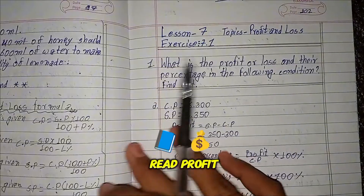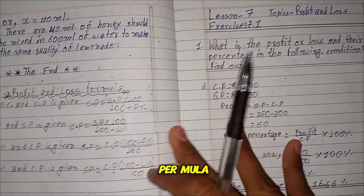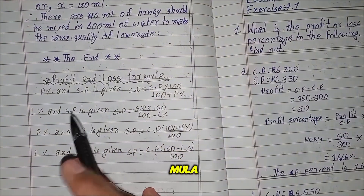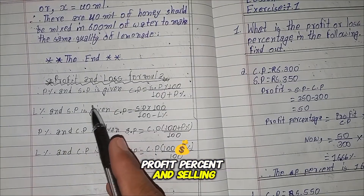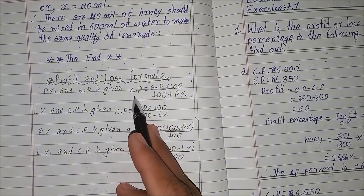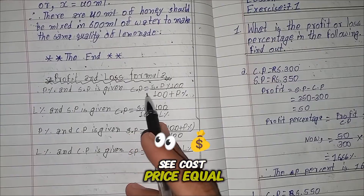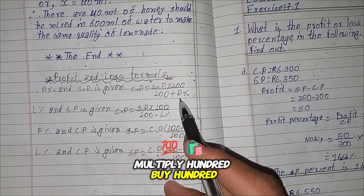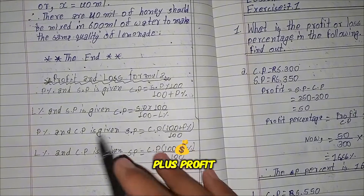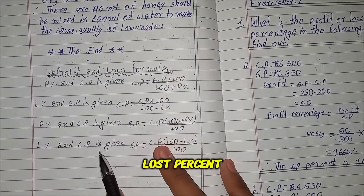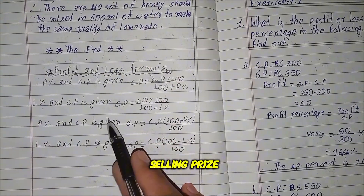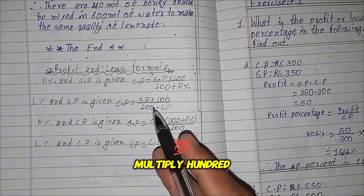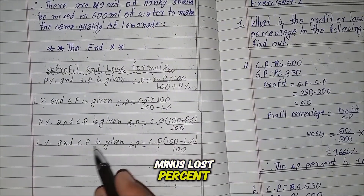First of all, we read the Profit and Loss formulas. When profit percent and selling price are given, cost price equals selling price multiplied by 100, divided by 100 plus profit percent. When loss percent and selling price are given, cost price equals selling price multiplied by 100, divided by 100 minus loss percent.